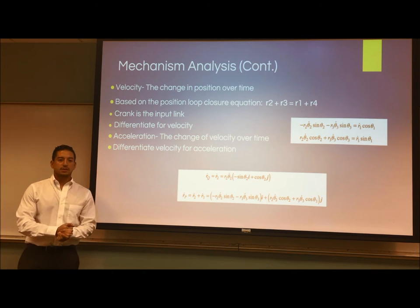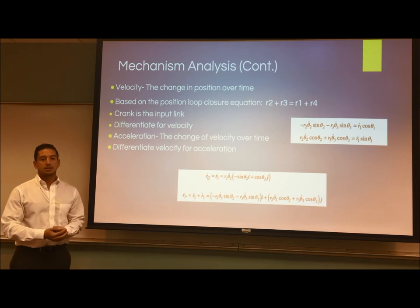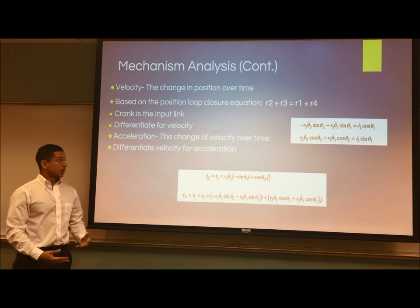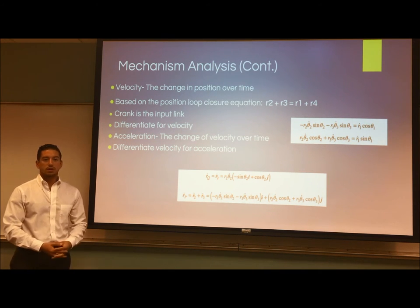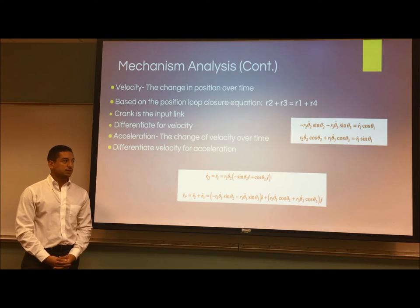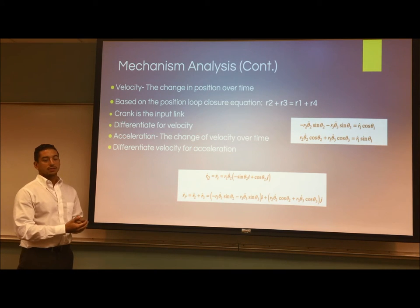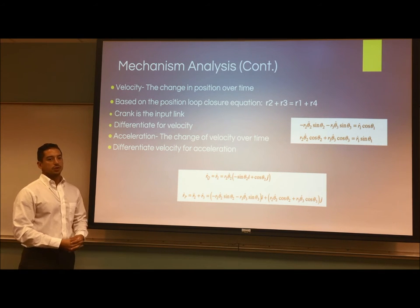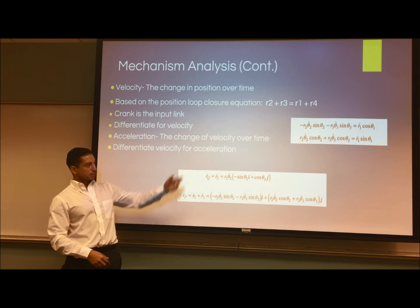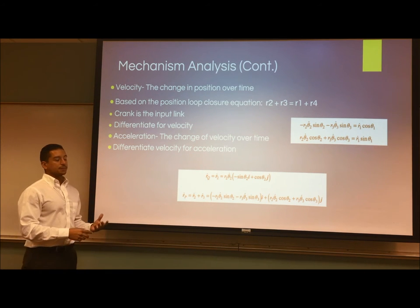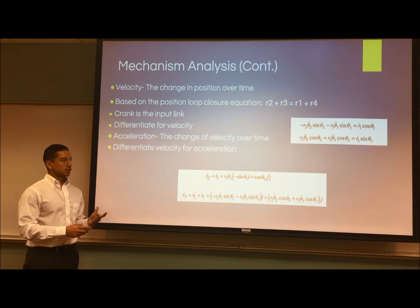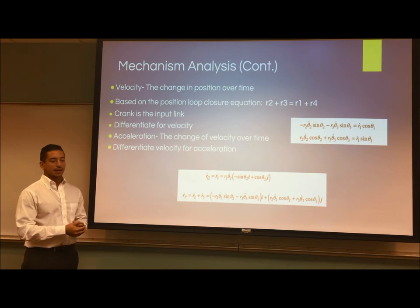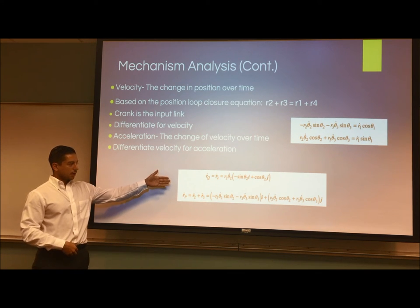I'm going to focus now on the velocity and acceleration analysis that we did for our project. To accomplish this, we start with the loop closure equations, just like in the positional analysis. We separate it into components and differentiate it. As velocity is the change of position over time, we differentiate the loop equation to get the equation shown on the right. We use a matrix to solve two equations, find the missing unknowns, and then use the loop closure principle with vectors to find the remaining unknowns.